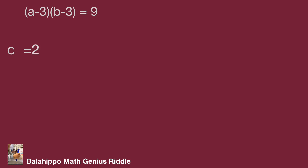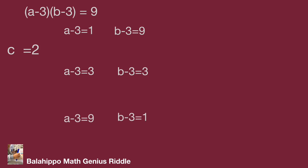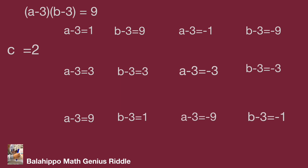After that we have the quantity A minus 3 multiplied by the quantity B minus 3 equal to 9. There are several factor pairs to get the result: A minus 3 equals 1 and B minus 3 equals 9; A minus 3 equals 3 and B minus 3 equals 3; and also 9 times 1, negative 1 times negative 9, negative 3 times negative 3, and negative 9 times negative 1. From each group we get A equals 4 and B equals 12, or A equals 6 and B equals 6.